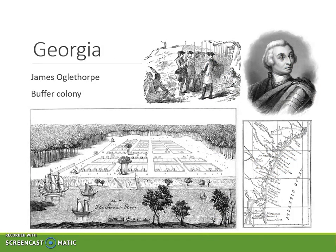Georgia would be the last colony to be established, not until 1733, and its purpose was twofold. First, it was to be a buffer between Spanish Florida and the wealthier Carolina colonies to the north, especially important as England had been through two wars against Spain. A second purpose was to provide opportunities for England's poor, especially those who languished in debtors' prisons. By removing them from custody they would no longer be a drain on the nation's coffers, and they could serve the purpose of defending the wealthier colonies to the north from Spanish and Native attacks.